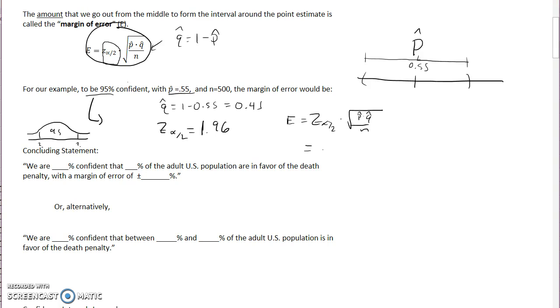Let's plug those values in. So it's going to be 1.96 times the square root of P hat is 0.55 times 0.45, all divided by the square root of N, which is, or divided by N, which is 500.